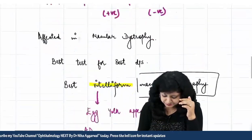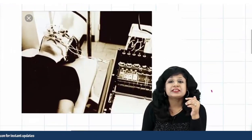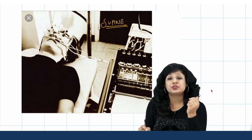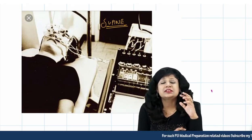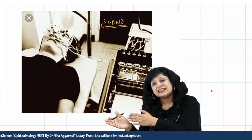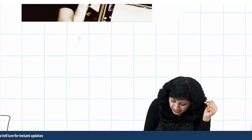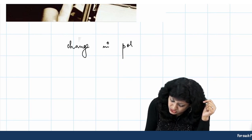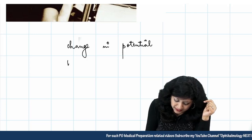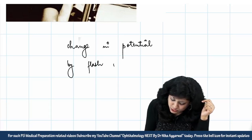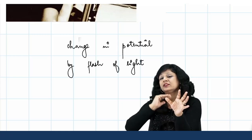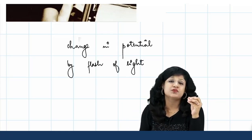Now let's go to ERG. ERG is taken in the supine position and you have so many electrodes. This is concerned with the retina — it measures the activity of different kinds of cells at the level of the retina. ERG measures the change in potential when we show a flash of light. There is a resting potential in the eye, then we show a flash of light, and this light causes a change in the potential, which we record with the help of ERG.